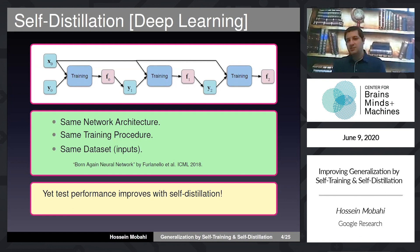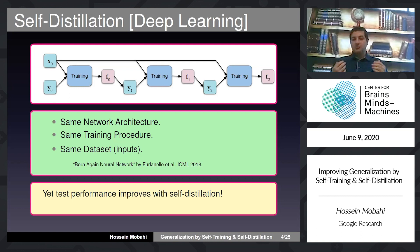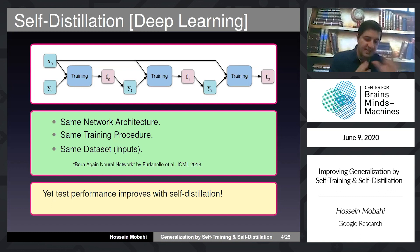What people in the deep learning community observed — and 'Born Again Neural Networks' was one of the main references showing this — was that the test performance of these models can actually improve over iterations. At first glance, this was very weird and surprising, because there is no external information coming from anywhere. It's the same network architecture, the same training procedure, and the same dataset. Somehow this internal loop is able to generate models that perform better.